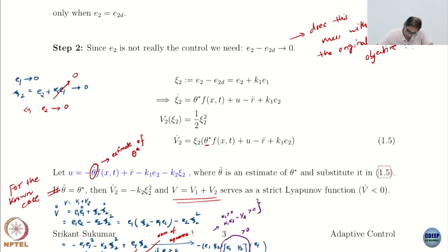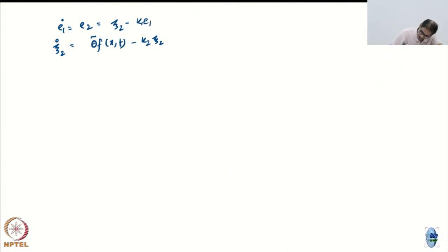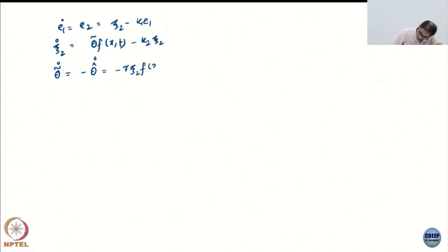Psi2-dot will be theta-tilde times f(x,t) minus k2 times psi2 — correct. And theta-hat-dot, or written the other way around: theta-tilde-dot equals minus theta-hat-dot, and that equals minus gamma times psi2 times f(x,t).